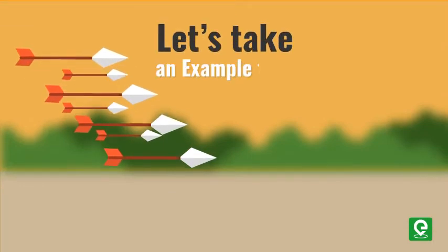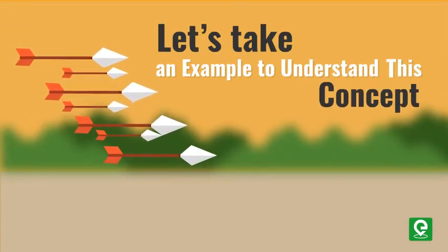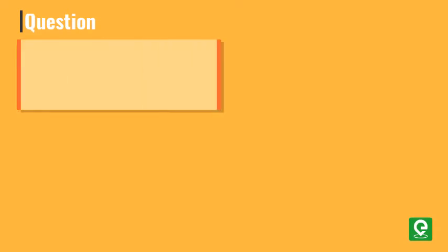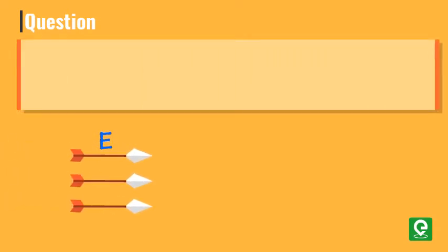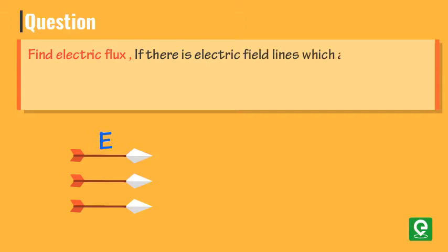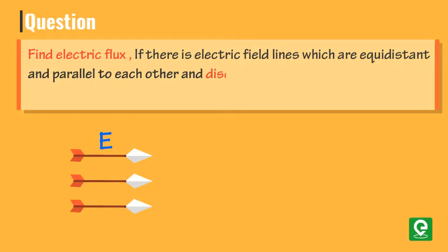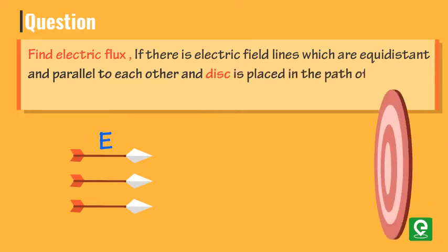Let's take an example to understand this concept. Question: find electric flux if there are electric field lines which are equidistant and parallel to each other, and a disc is placed in the path of electric field which is of radius r.